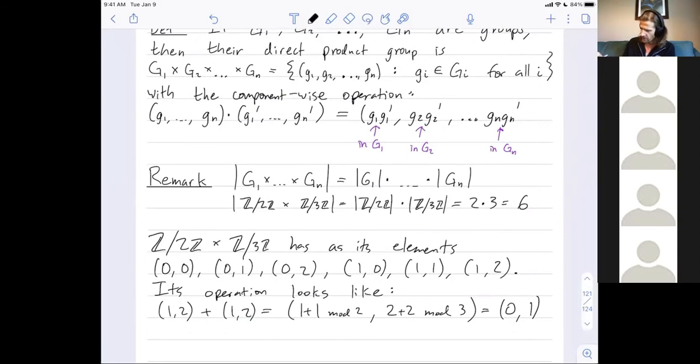Let's do one more. Maybe let's take (1,1) and combine that with (0,2). This is 1 plus 0 in the first group, so I add them mod 2. And then I have 1 plus 2 in the second group, so I combine them mod 3. And I get 1 and then 3 mod 3, which is 0.